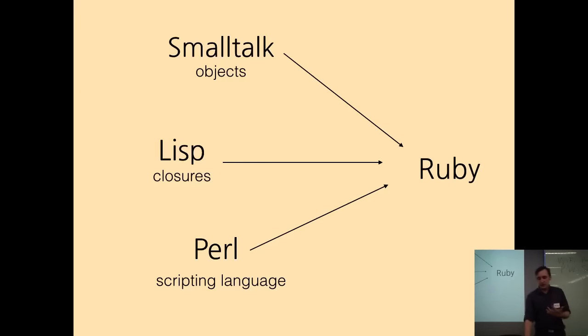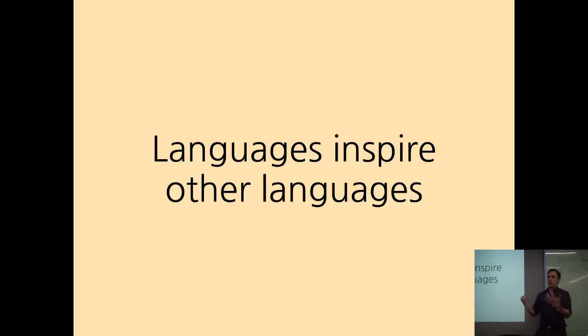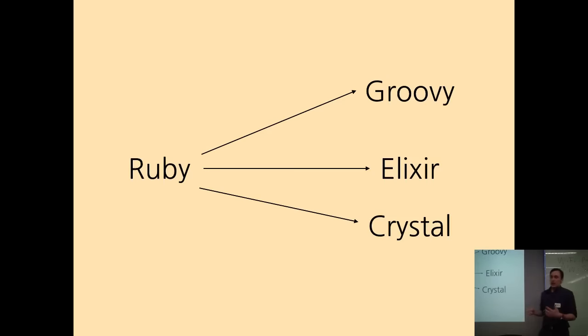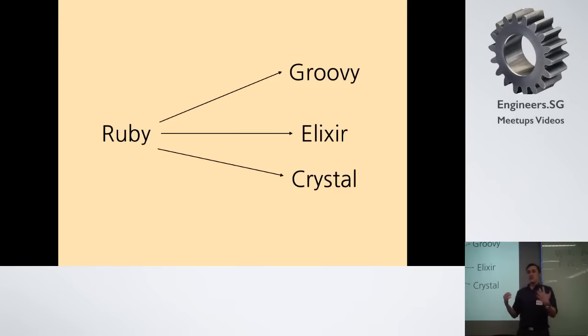As languages are inspired by other languages, then when they are mature, they also provide some information and are copied to other languages. Words from English are used in various different languages like Polish, Spanish, or even Japanese. There are different languages that use syntax or method names or grammar constructs from Ruby. There is Groovy, which is a language working on Java virtual machine. There is Elixir, which was created by José Valim, who is a core team member of Ruby on Rails. And there is Crystal, which is the topic of my today's talk.